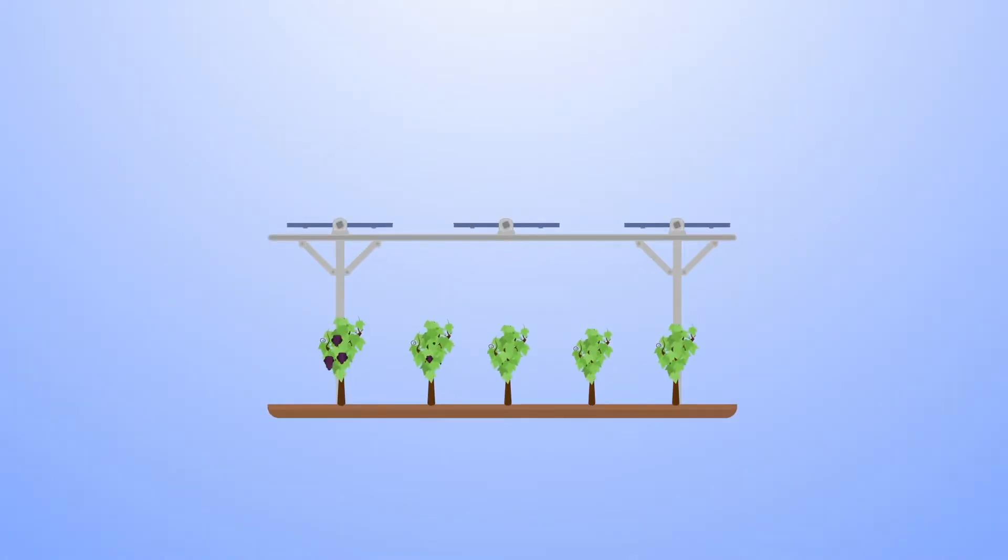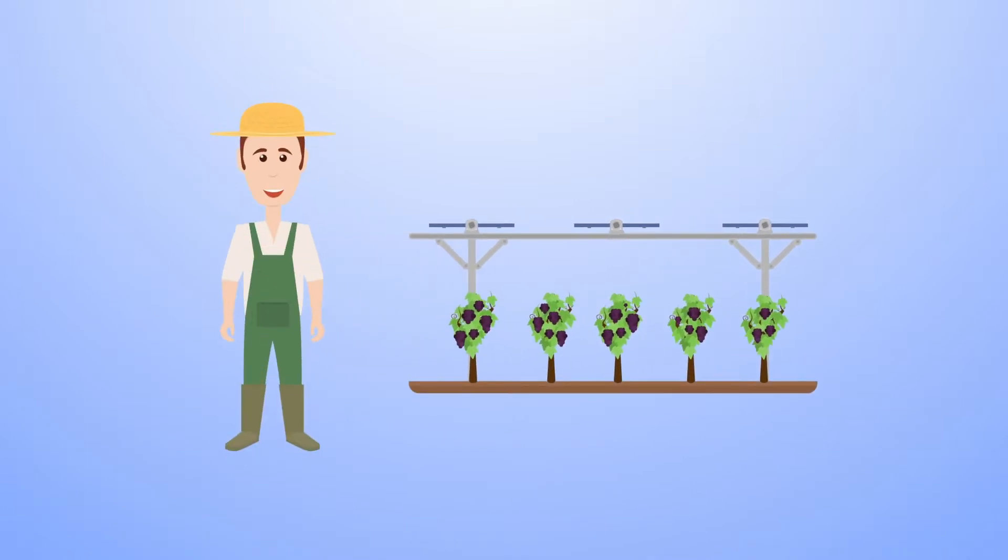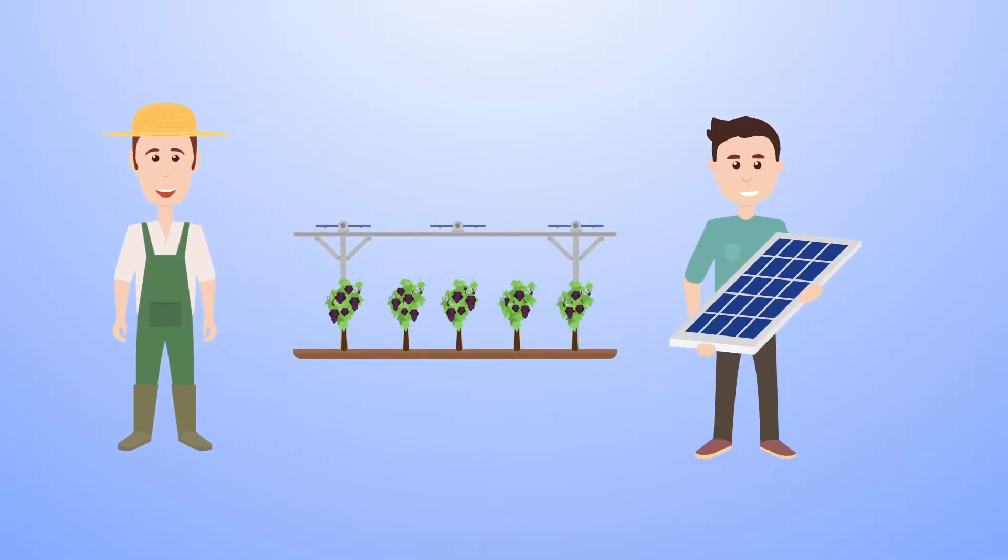Agrivoltaism is a virtuous model with three actors. The farmer, who has a solution to improve its crops growth and protect it from climate hazards. The power producer, who invests in this photovoltaic plant and sells the electricity.